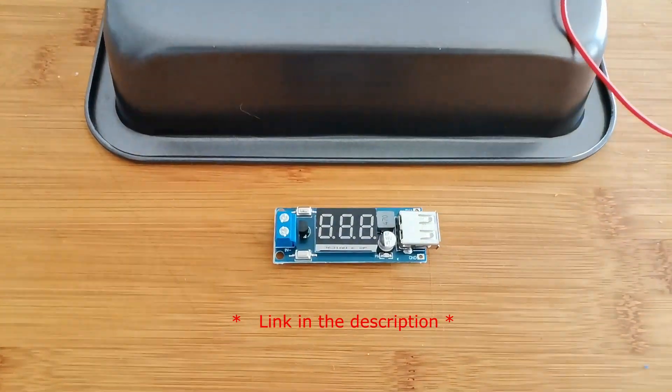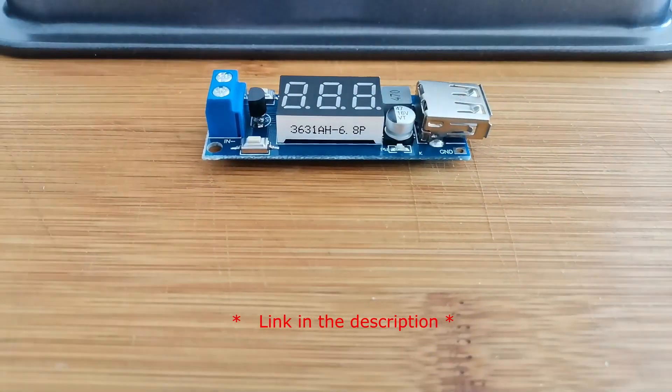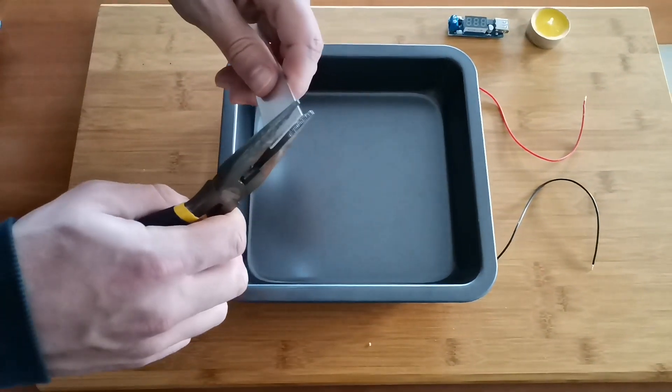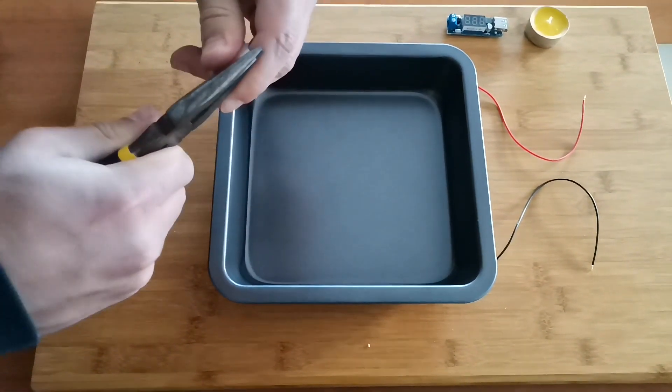The next step is installing a voltage regulator. Voltage could potentially come up to 15 volts, which is too high for phones, so we need a voltage regulator to set it down to 5 volts.